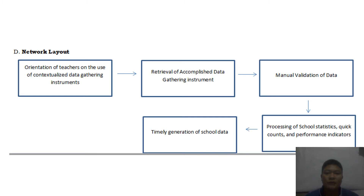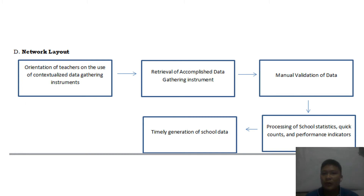For example, I have listed orientation of teachers in the use of contextualized data gathering instruments and software needed for IS implementation, available accomplished data gathering instruments, manual validation of data, timely generation of visual data, and processing of school statistics, quick counts, and performance indicators. The primary purpose of having an IS for the school is to streamline data collection, processing, and analysis, and to have data quickly available when required by the division or district.